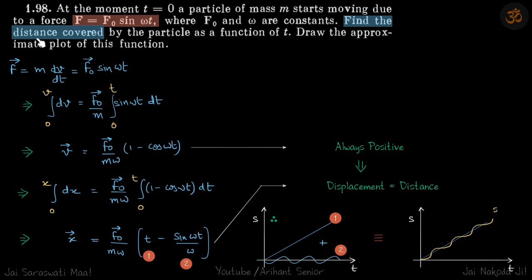Now we need to find distance, but what we have is displacement. One thing we can see here is that this is the velocity, and cos(ωt) is always less than one, which means velocity is always positive.